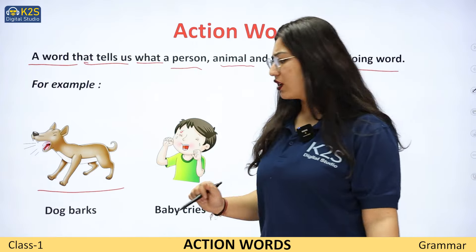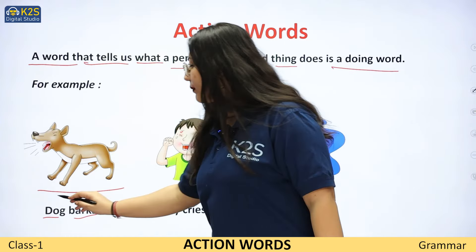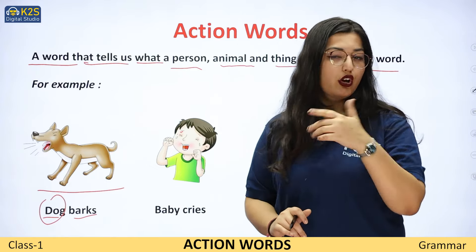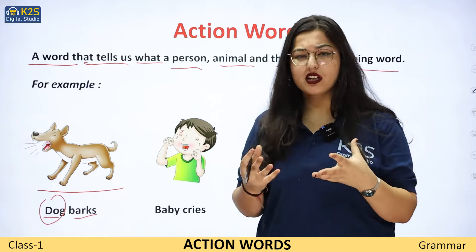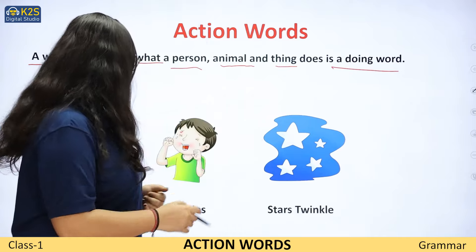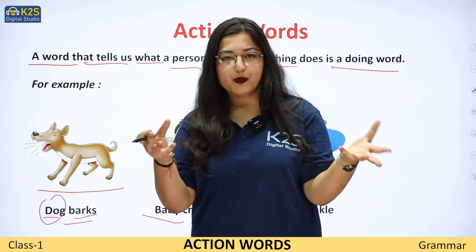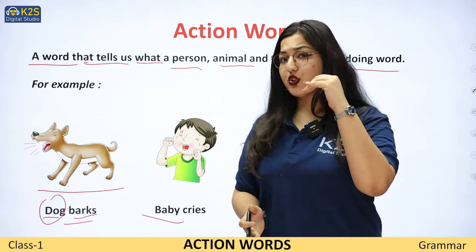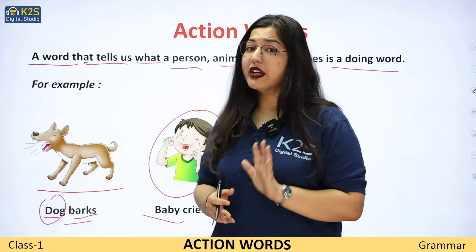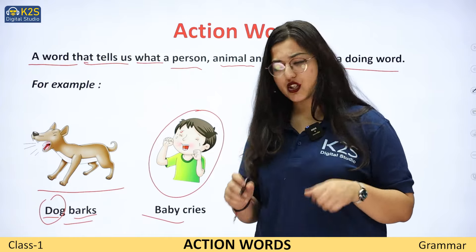Jaise ki dog barks. Dog bark — jo ek dog hai, woh bark kar raha hai. Toh dog mera kya ho gya? Ek noun. Aur woh kaunsa action kar raha hai? Barking ka action. Ek baby hai — ek chota sa baby. Woh ro raha hai. Toh baby toh ho gya mera noun, aur cries — matlab rona — toh rona kya ho gya? Ek action ho gya.